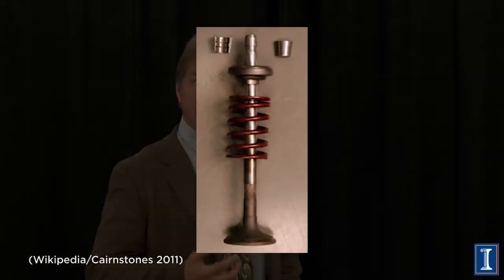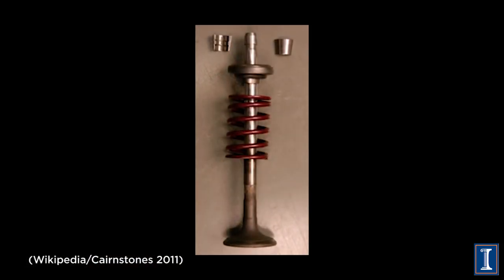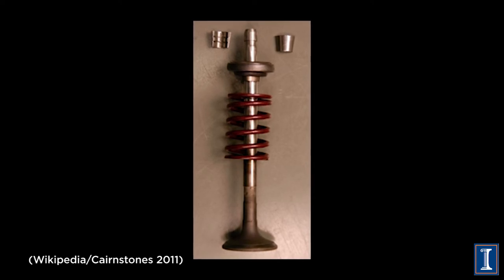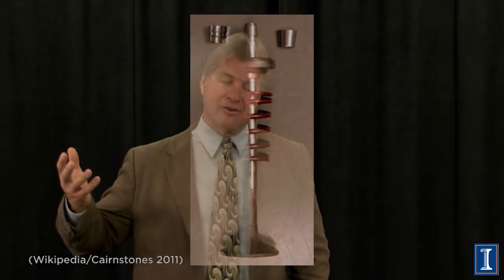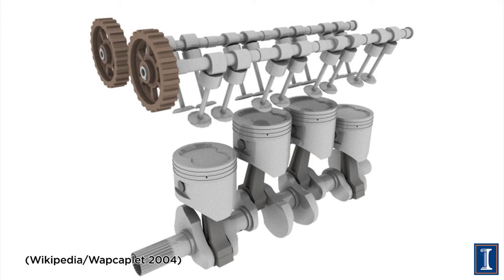Valves. Every cylinder needs two valves. But if you put four valves into the cylinder, you can get the exhaust out faster and more efficiently, and get the fuel in faster and more efficiently. So if you have an eight-cylinder engine with 32 valves, you have four valves per cylinder instead of two.